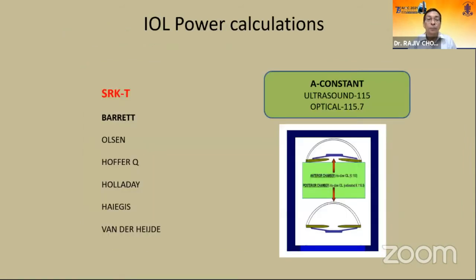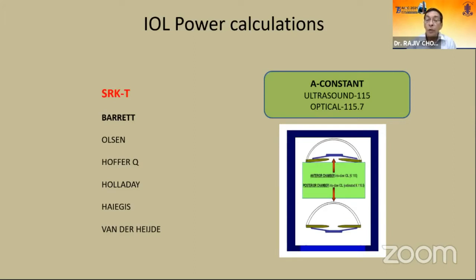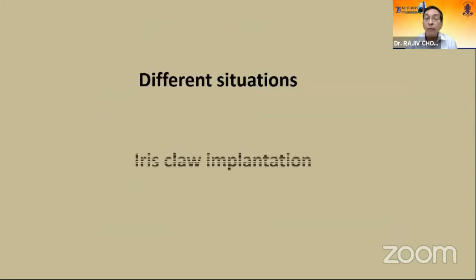For formula calculation, the best is SRK/T or Barrett. For anterior chamber placement the A-constant is 115, and for posterior retrofixation placement — because it is farther from the cornea — it is 116.5.